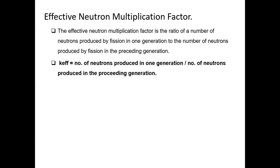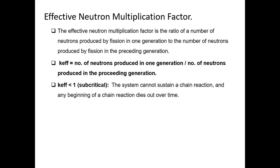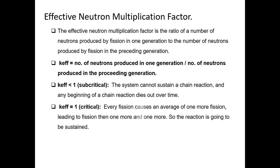With a system of uranium and a neutron source, neutrons can get multiplied — from one neutron you can have two or three neutrons per fission, and this can keep escalating over time. The effective neutron multiplication factor is the ratio of the number of neutrons produced by fission in one generation compared to the total number produced in the previous generation.